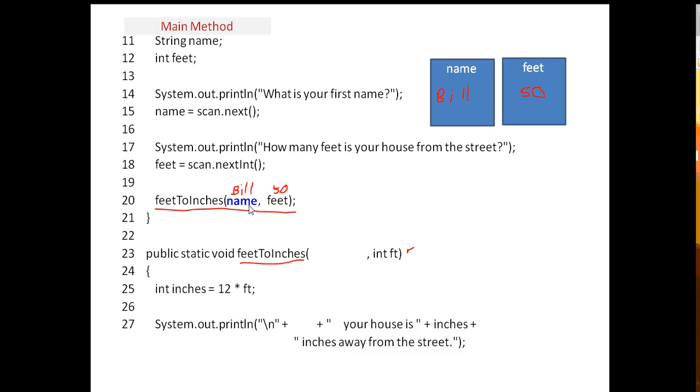And so again we call these passing. We're passing those values, passing the arguments. So when this method call invokes this method called feetToInches, it is going to pass bill, and it's going to pass 50.